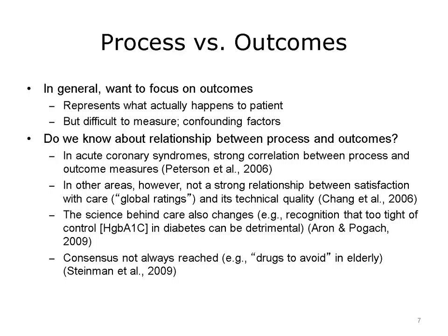Outcomes represent what actually happens to the patient. However, outcomes can be difficult to measure and also have confounding factors. The patient may receive the highest quality process care, but for some reason unrelated to that care, the patient has a bad outcome. Is there a relationship between process and outcome? In some areas such as acute coronary syndrome, there's a strong correlation between the process measures undertaken and the outcomes that result. But in other areas, the relationship is not as strong.